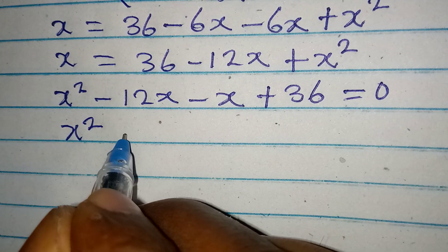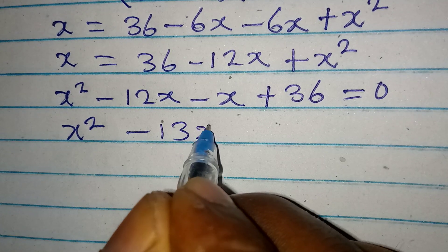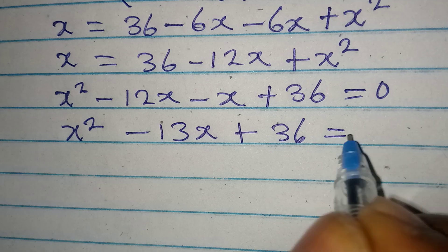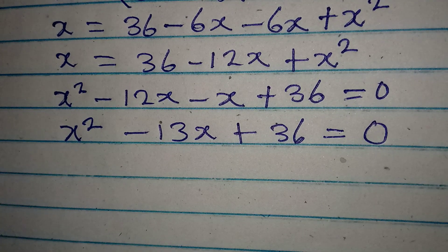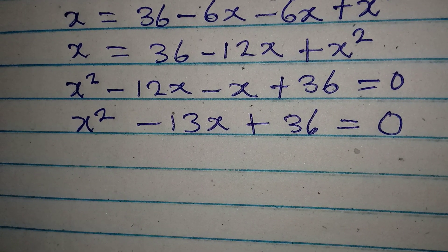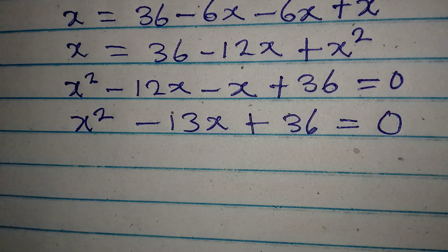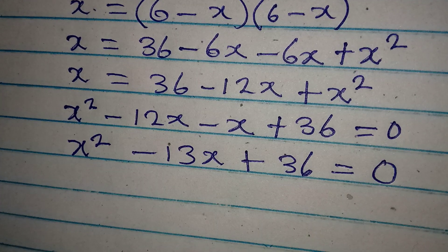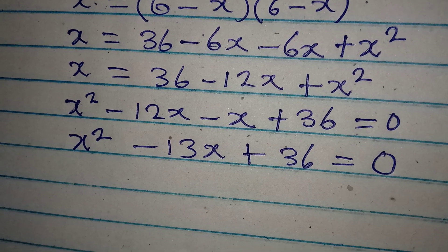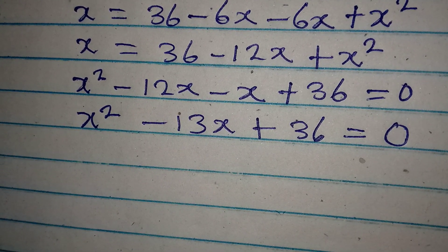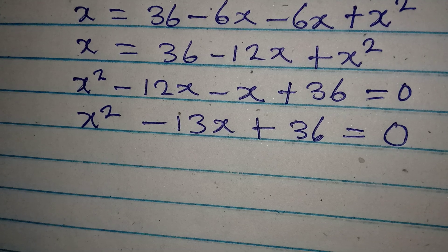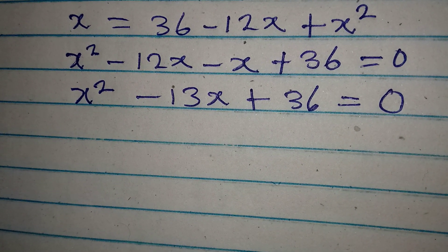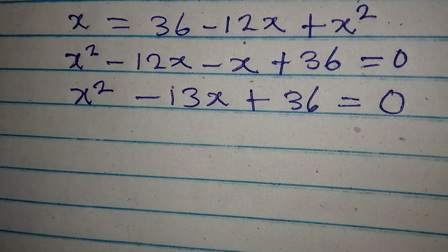x squared minus 13x plus 36 equals 0. Now what method do you think we can use to solve this problem? We can actually solve this problem by using the factorization method, or you can decide to use the formula method.